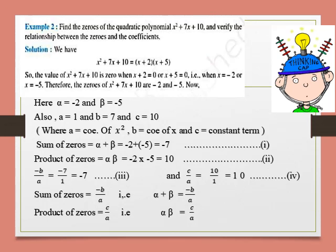Let's solve problems based on this relationship. Find the zeros of the quadratic polynomial — first we find the values of x and then verify the relationship. For x square plus 7x plus 10, splitting the middle term gives (x plus 2)(x plus 5). So the values of x are minus 2 and minus 5. Here alpha equals minus 2 and beta equals minus 5. Comparing coefficients: a equals 1, b equals 7, and c equals 10, where a is the coefficient of x square, b is the coefficient of x, and c is the constant term.